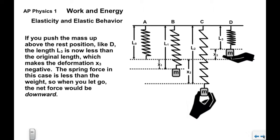If we were to lift the mass up above the rest position, like we have in situation D here, the length L3 is now less than L1 and less than L0, so that would make the deformation x3 negative. The spring force in this case would be less than the weight, so if you were to let go, the net force would be downward because mg is greater than the spring force, and the mass would accelerate downward.